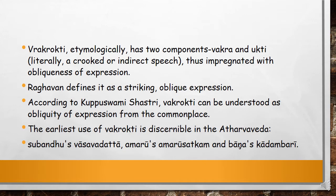The term Vakropti etymologically has two components: it is made up of two words, Vakr and Ukti. Vakr means crooked — something which is indirect or crooked, therefore impregnated with obliqueness of expression. According to Raghavan, it is a striking oblique expression. According to Kupaswami Shastri, Vakropti can be understood as an obliquity of expression from the commonplace — that is, when we deviate from our common daily language and give it an oblique structure, it becomes Vakropti.